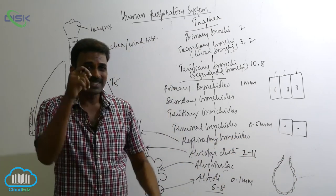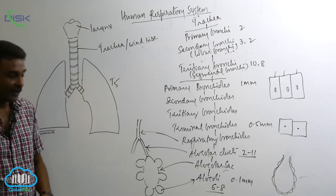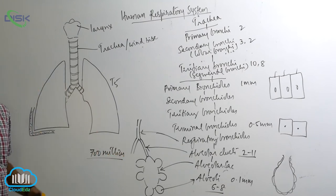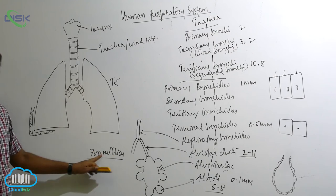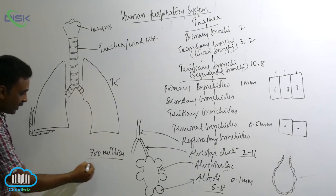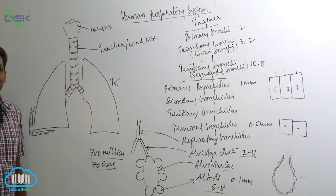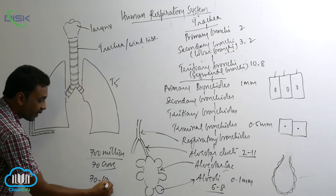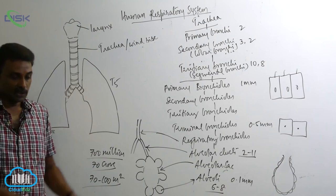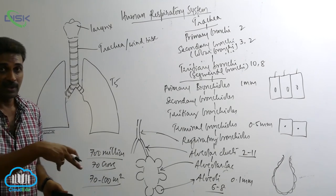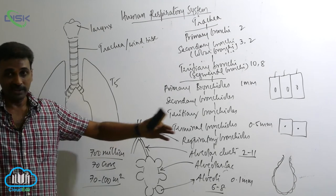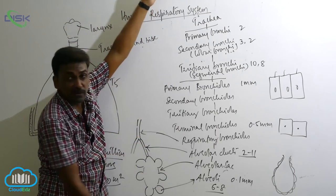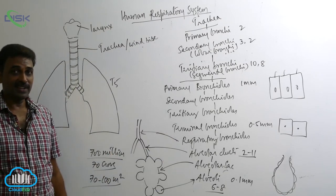The total number of alveoli — taking both lungs together — is 700 million, which is equal to 70 crore alveoli. Having so many alveoli greatly increases the surface area inside the lungs to 70 to 100 square meters. This enormous surface area, achieved through all these divisions, facilitates efficient gas exchange.